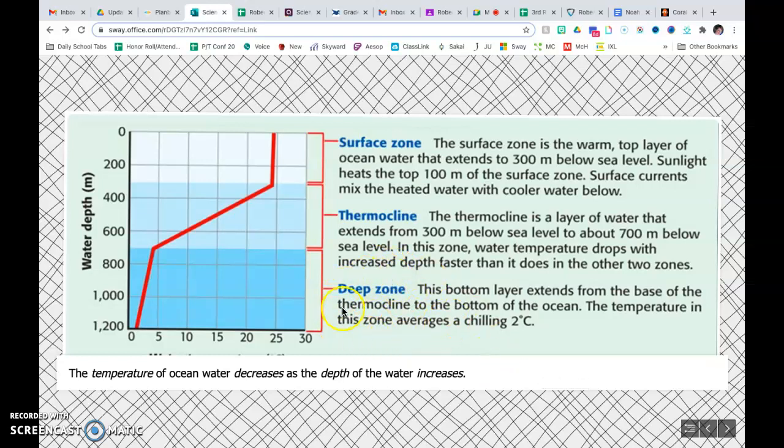That would be all the way down in the deep zone. This is the bottom layer that extends from the base of the thermocline to the bottom of the ocean. The temperature in this zone averages about 2 degrees Celsius. It's pretty cold.